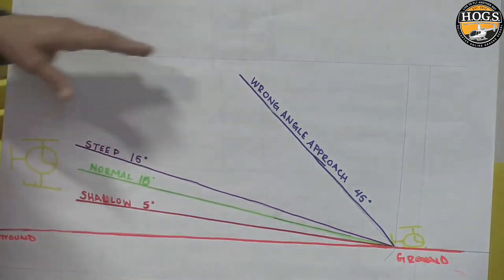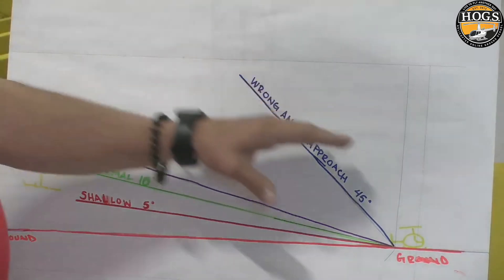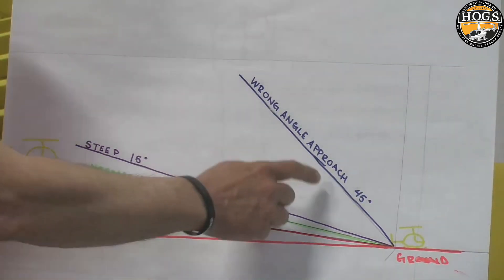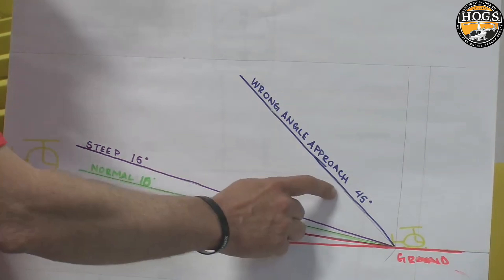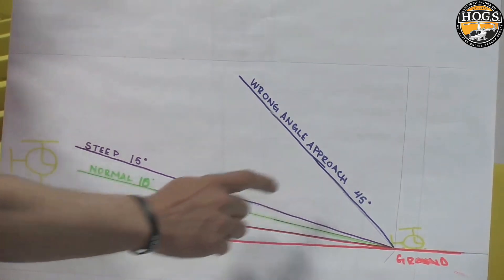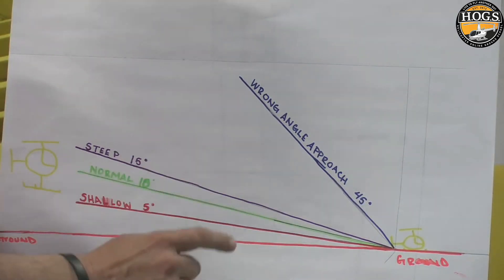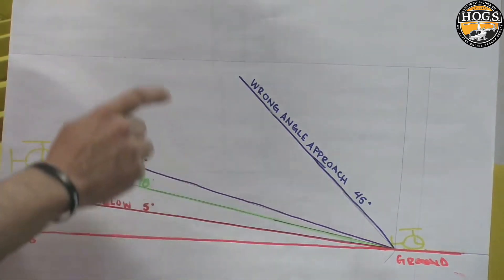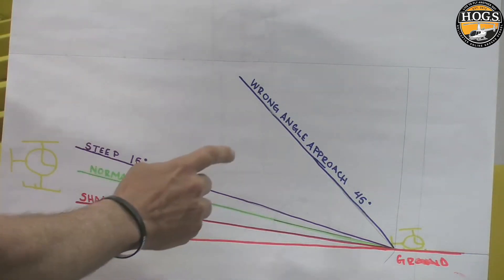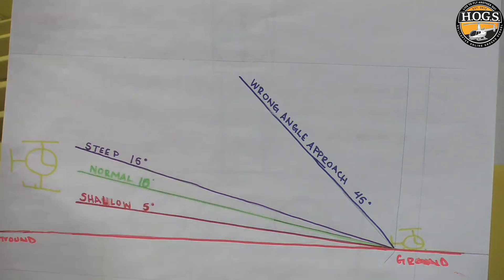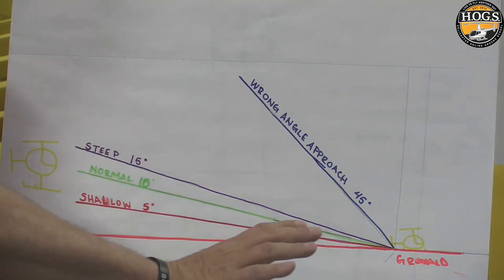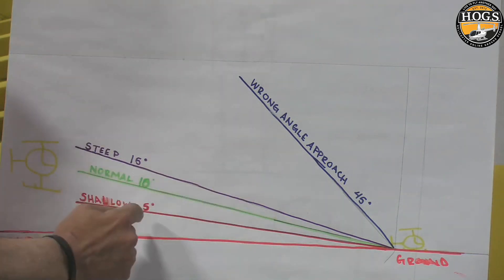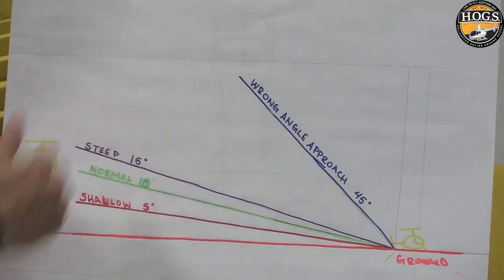There are people that are legitimately coming here and somebody has taught them to fly a steep approach at 45 degrees. If somebody is teaching you that, I'm going to be nice — you've been taught wrong. If there's some reason you've got to try to get into a spot at 45 degrees, you're coming in way too damn steep. Helicopter Flying Handbook — this is standard request training in the U.S.: shallow 5, normal 10, steep 15.